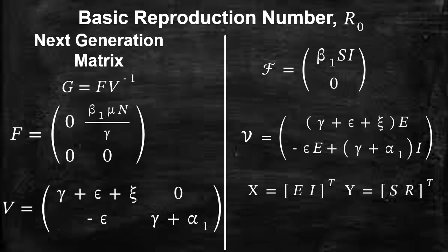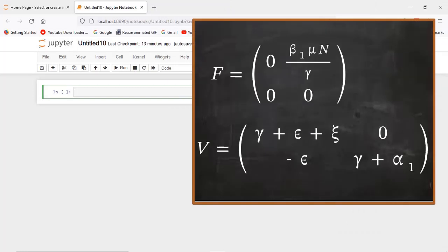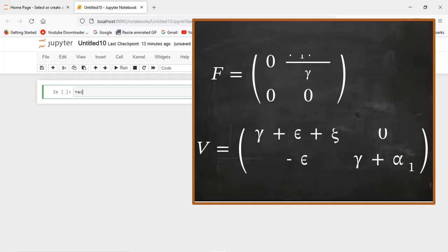Now let's go back to SageMath and see how we can compute this next generation matrix and therefore determine the basic reproduction number. Let's start by defining the variables — the variables which appear in the two matrices F and V. So let's define the variables.